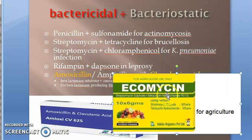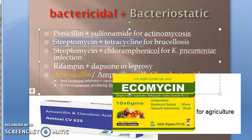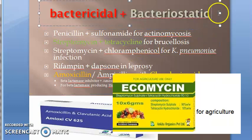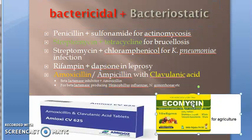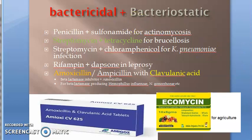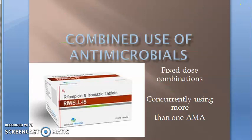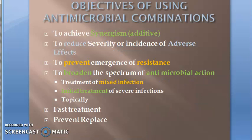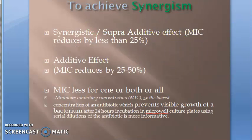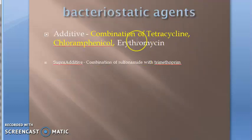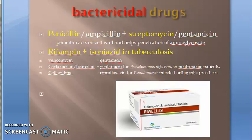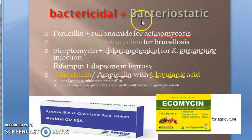Streptomycin plus tetracycline is used mostly in agriculture. Quick revision: under synergism, combination of tetracycline and chloramphenicol (bacteriostatic); penicillin with streptomycin, rifampicin with isoniazid for tuberculosis (bactericidal); bactericidal plus bacteriostatic examples include streptomycin with tetracycline and amoxicillin with clavulanic acid.